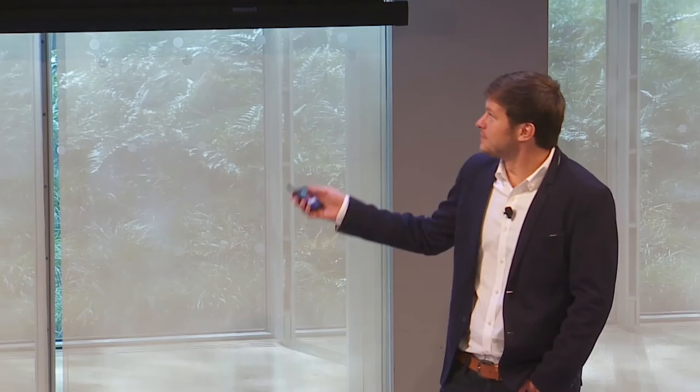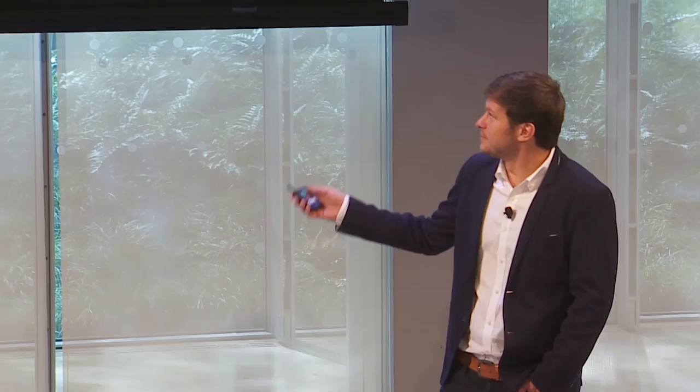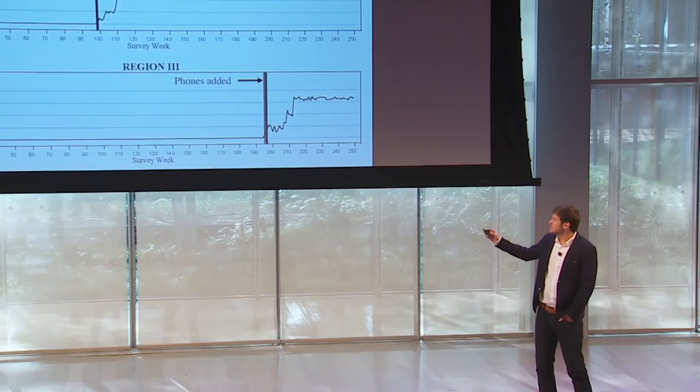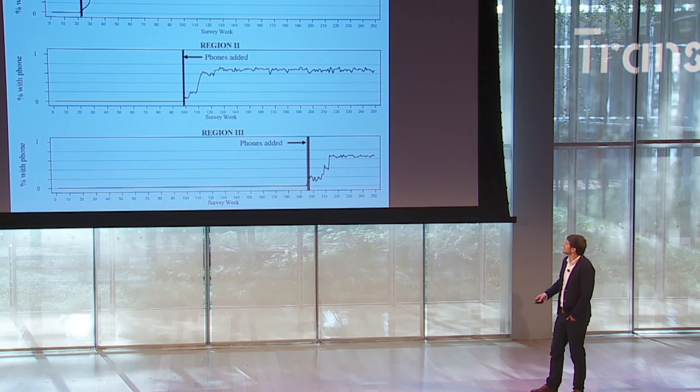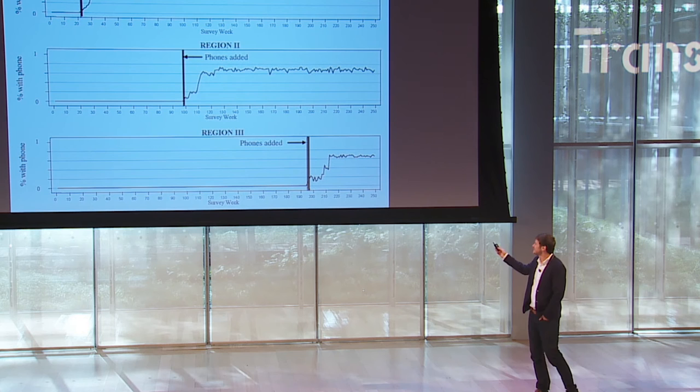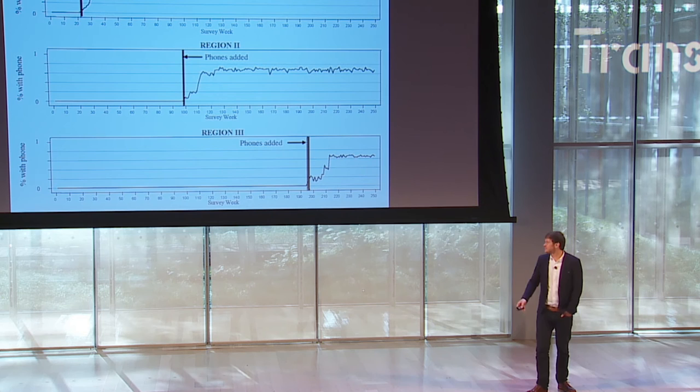On these charts, we look at the three regions with the survey period on the x-axis, and for each region, the uptake of mobile phones by the fishermen in Kerala. Before phone reception was available, no one had a phone. Then phones were added to these three regions at different points in time, and then fishermen bought phones — around 70% of the fishermen had mobile phones after the introduction.